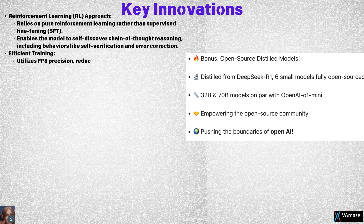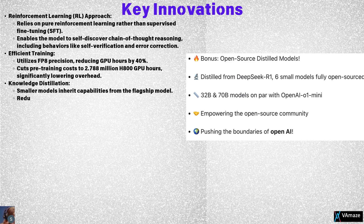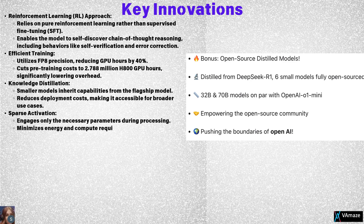Second, it employs FP8 precision, which reduces GPU hours by 40%, cutting pre-training costs to just 2.788 million H800 GPU hours, an impressive reduction compared to traditional methods. The use of knowledge distillation allows smaller models to inherit the capabilities of the flagship model, lowering deployment costs while retaining top-tier functionality. Additionally, sparse activation ensures only the necessary model parameters are engaged during processing, significantly reducing energy and compute demands.